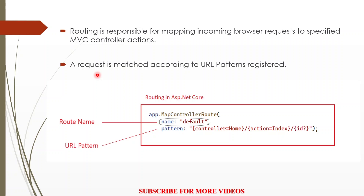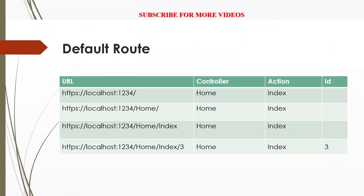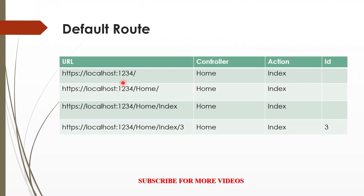In this example, I am showing you the default route. Its name is 'default' and its pattern is controller=Home, action=Index, and id with a question mark. This means Home is the default controller, Index is the default action, and id is optional — the question mark sign means it is optional. The default route has many variants: if the URL is just a slash, it will target the Home controller with Index action, because those are the default values.